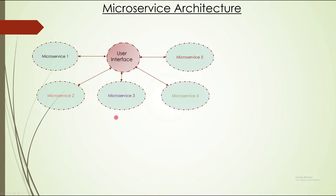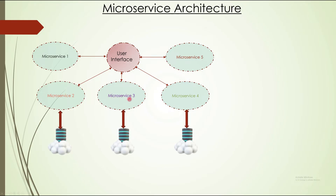All these services communicate with each other using exposed REST APIs or any interface. Each service also has its own persistence layer — microservice two and three do not share the same database. Each microservice has its own persistent layer and talks independently to the user interface. If you want to make a change in microservice one, you do not need to touch, rebuild, or redeploy the other microservices.